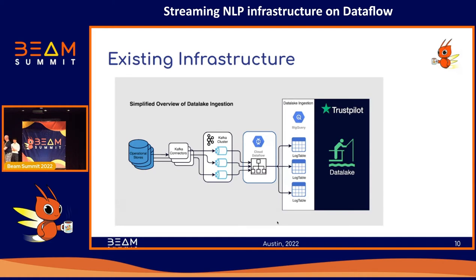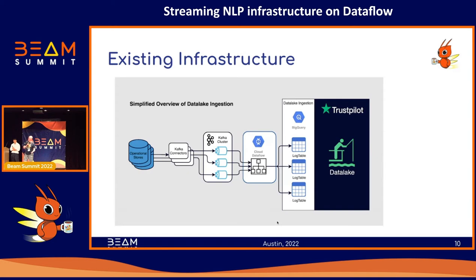Looking at our existing infrastructure: we have operational stores using Kafka connectors which push into our Kafka cluster. From there we use Cloud Dataflow, which ingests our data into BigQuery. This is quite nice because we also have the option to use the batch model with the same Dataflow job to backfill data older than 30 days for partitioning in BigQuery. That's a feature we've been using, and it was in place before I even joined the company.